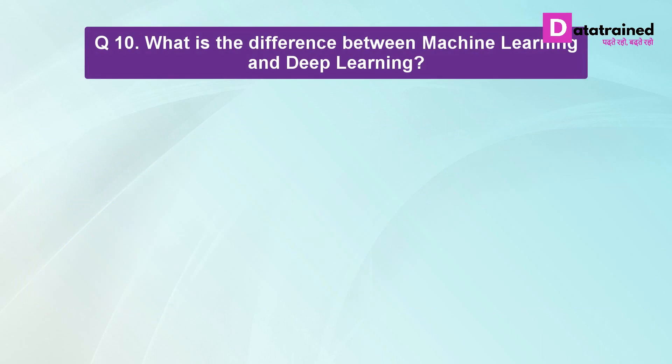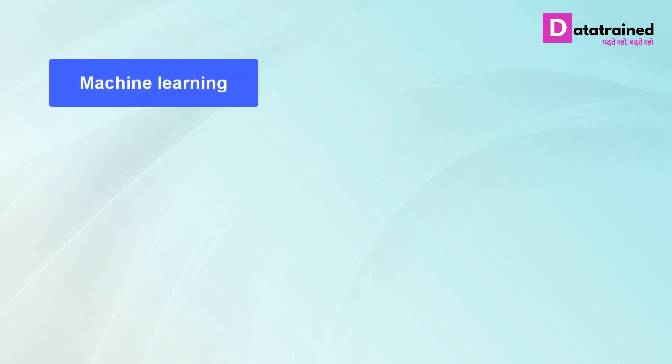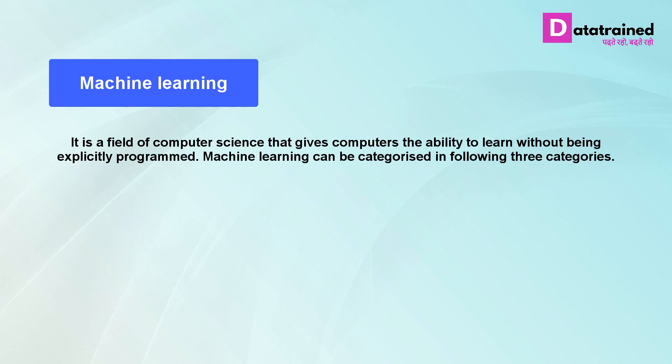What is the difference between machine learning and deep learning? Machine learning: It is a field of computer science that gives computers the ability to learn without being explicitly programmed. Machine learning can be categorized in following three categories.